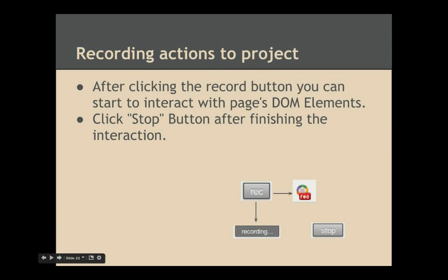Recording an action for a project is the most interesting part of CBA. You select the project from the project data grid and then click the record button. You will see a 'rec' message appear under the CBA logo in the Chrome toolbar. That means you can start to interact with the page and click the stop button after finishing the interaction.